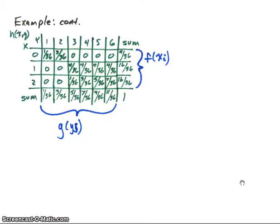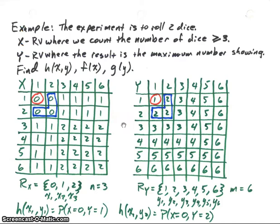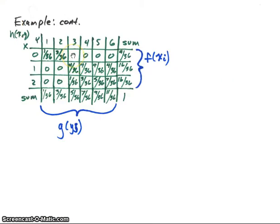Continuing with the joint distribution function table: where X equals zero and Y equals one, we have probability 1/36. Where X equals zero and Y equals two, that's 3/36. For X equals zero and Y equals three, looking at the table there's no place where both can occur simultaneously, so that probability is zero. You can see the rest of the table — I've filled it all out. The joint distribution function is this center area showing our X and Y values.